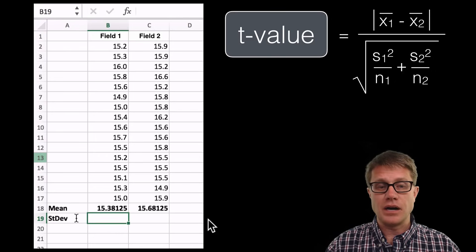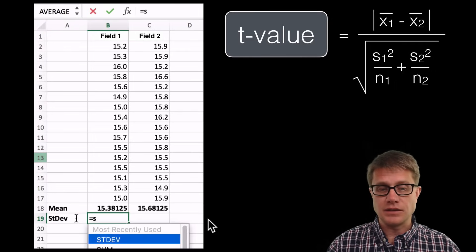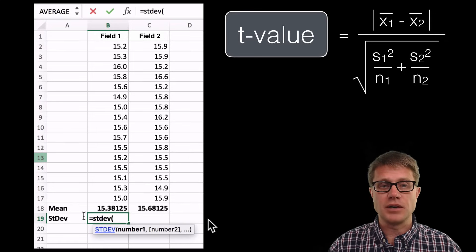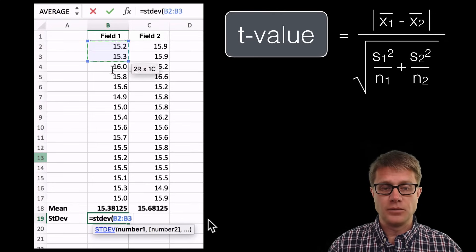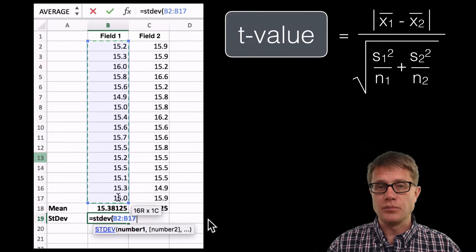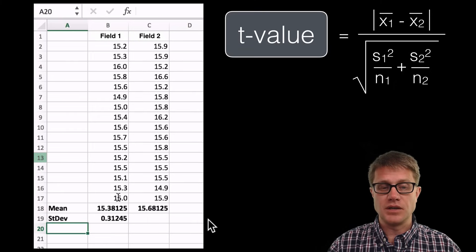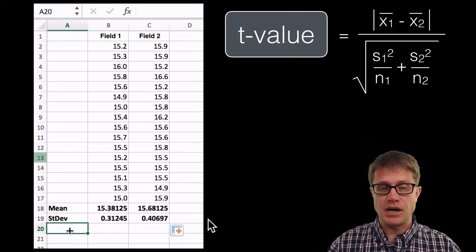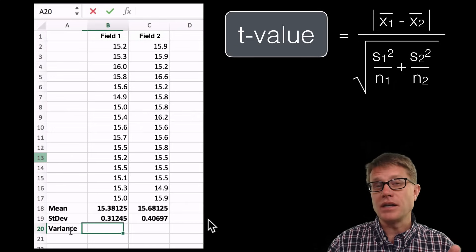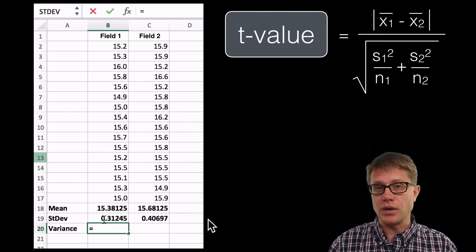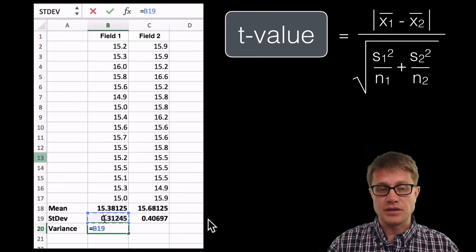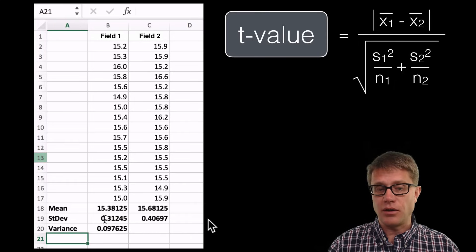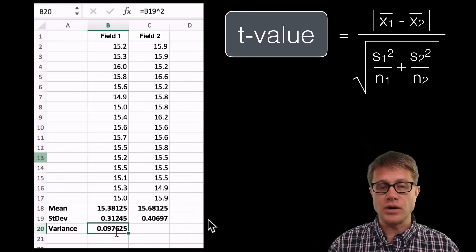Next thing I have to figure out is my standard deviation. That's equals STDEV, and I'm going to sample field one. We're going to have a standard deviation of 0.3124. I'm now going to apply that to field two's data set. We have a higher standard deviation. Now I have to calculate the variance. To do that you have to square the standard deviation. So there's my variance for field one and here's my variance for field two.